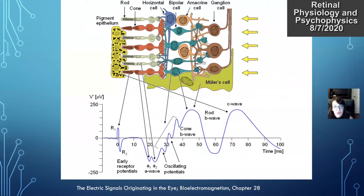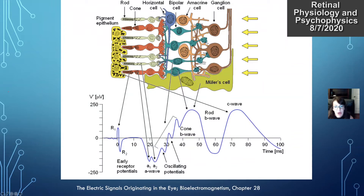Comparing the retinal structures with what you see on an ERG — from the RPE and photoreceptors through to the ganglion cell layer, each potential corresponds to a structure. The early receptor potential is initiated from the first chemical reaction elicited by a light flash. The A wave, typically the first thing we see on an ERG, is initiated by the photoreceptors or outer retina. The B wave is elicited by the bipolar cells. The C wave, not really looked at too much, corresponds to the RPE.